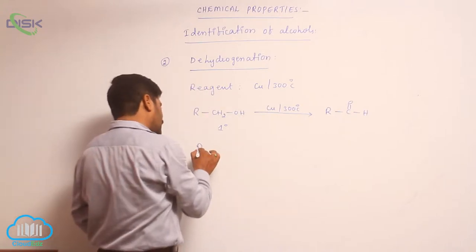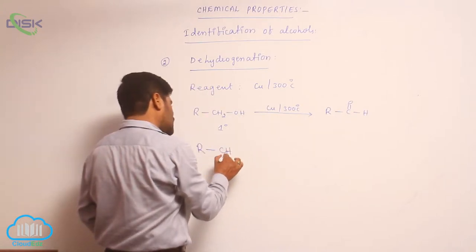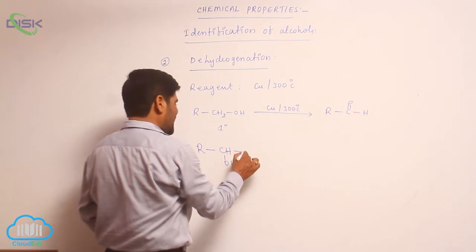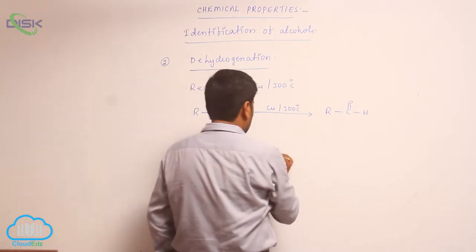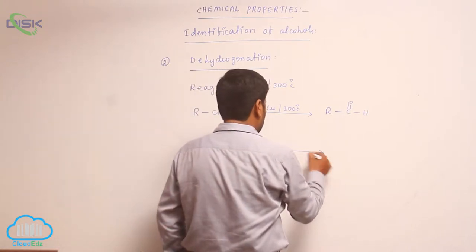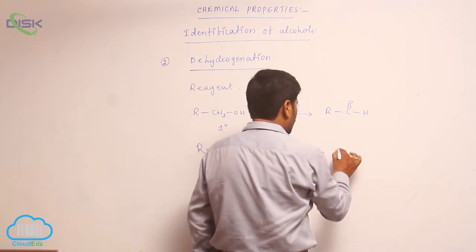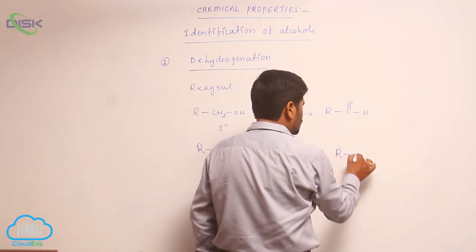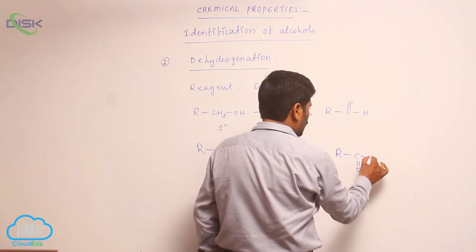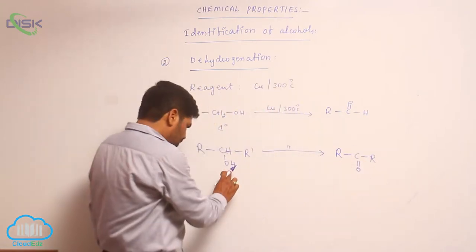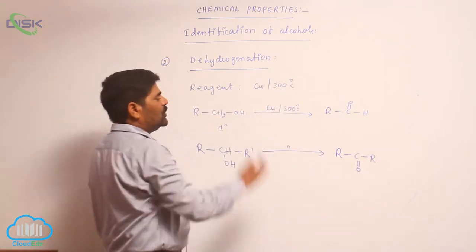Coming to second-degree alcohol — RCHOH·R' — reacting with copper at 300 degrees centigrade. This converts into a ketone because of loss of H₂. So, a second-degree alcohol converts into a ketone.